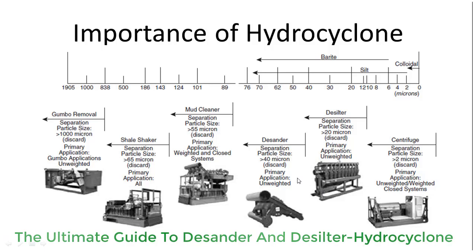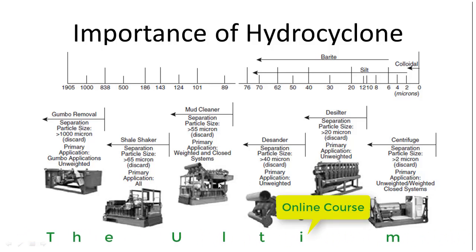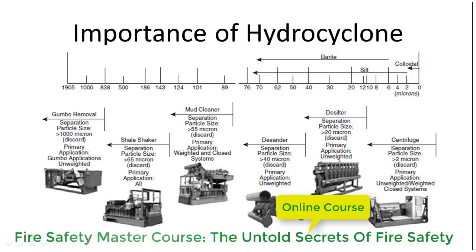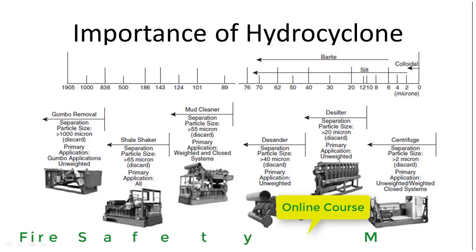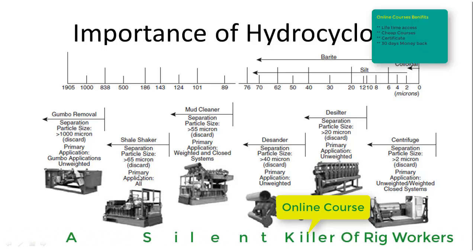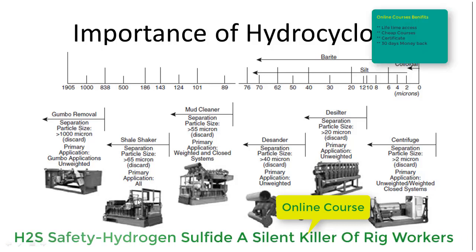The desander and desilter are designed to handle 125 percent or more of the circulation rate while drilling, so they are more capable of handling the solid concentration after the drilling fluid passes through the shale shaker screen.